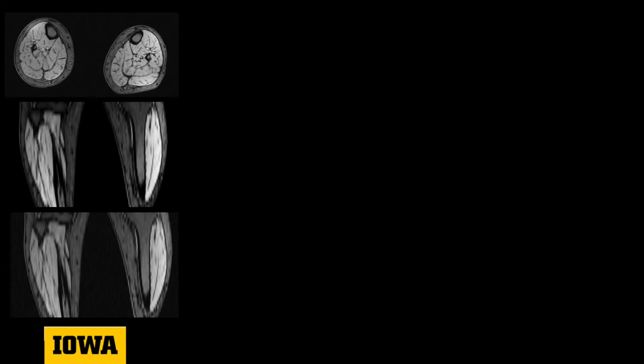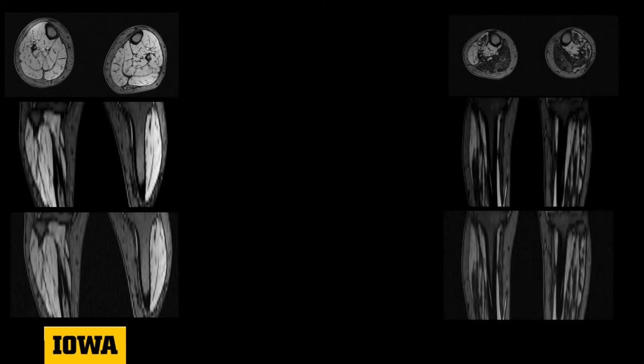However, many diseases can cause severe changes to the muscle group. For example, the image in the red row is from a patient with myotonic dystrophy type 1, the most common form of inherited muscular dystrophy in adults. We can see severe degeneration of the calf muscle in this image.